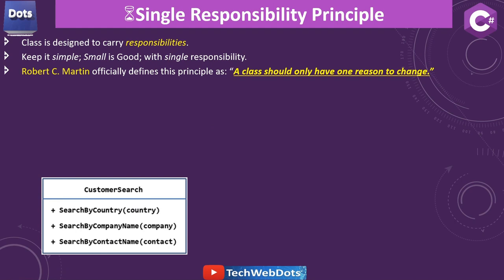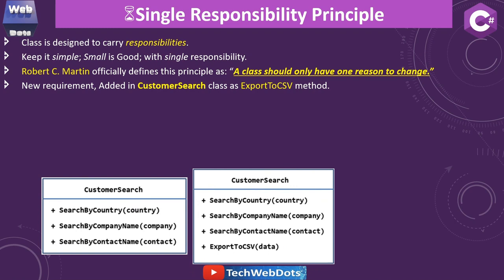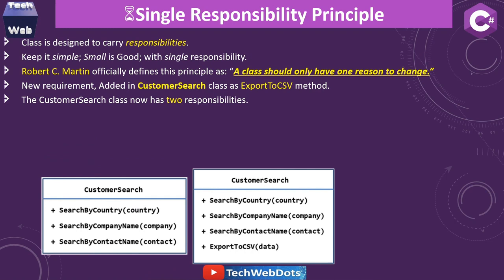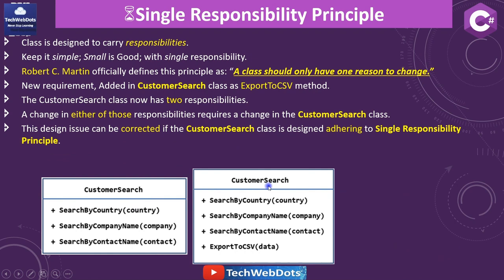This class is simple and contains only a single responsibility of search. But suppose a new requirement came and we also want to export this data to a comma-separated values file — CSV or XLS. Generally, to quickly provide this feature, we just add one method ExportToCSV in the existing class. But in the long term, this can create a problem because now this class contains two responsibilities: the search responsibility and the export responsibility. Whenever you want to make changes, you are ultimately testing two things — searching and export. A change in either responsibility requires a change in the CustomerSearch class, which is a violation of Single Responsibility Principle.